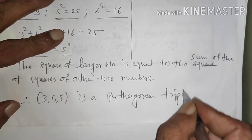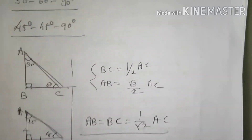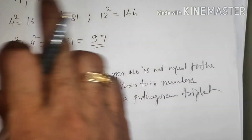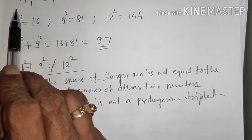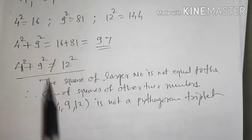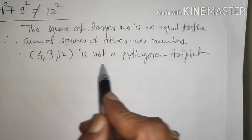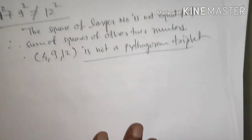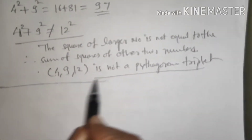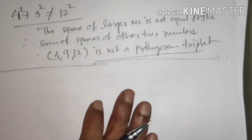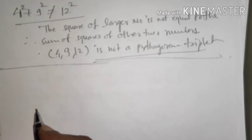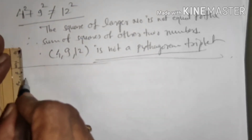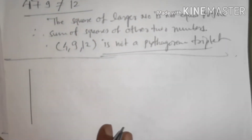So what you need to check is: among the three given numbers, if the square of the largest number equals the sum of squares of the remaining two numbers, then it is a Pythagorean triplet. If not, then it is not a Pythagorean triplet.